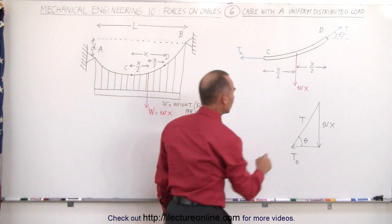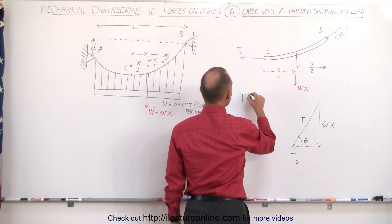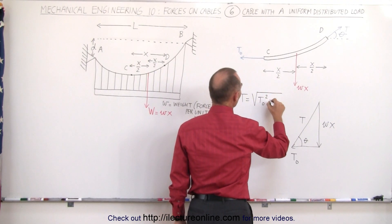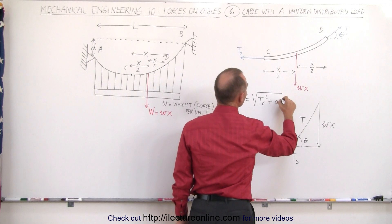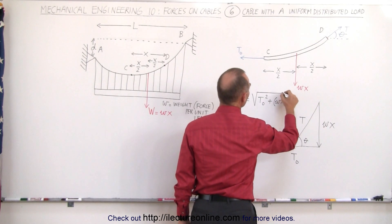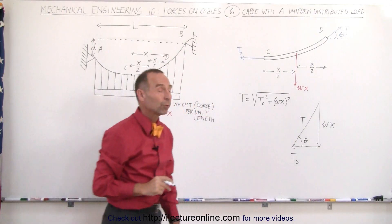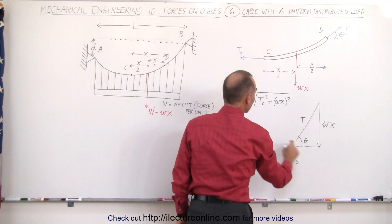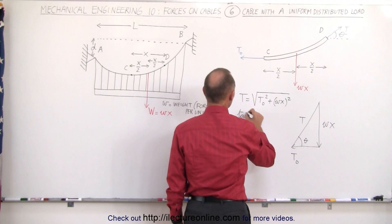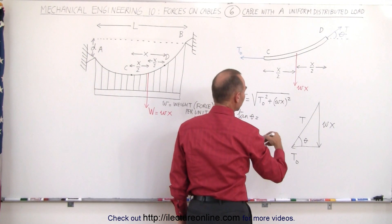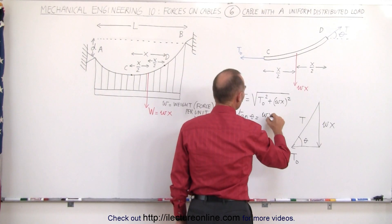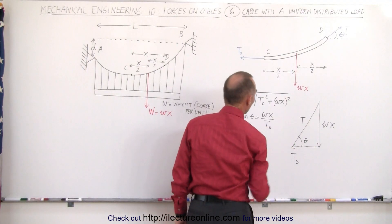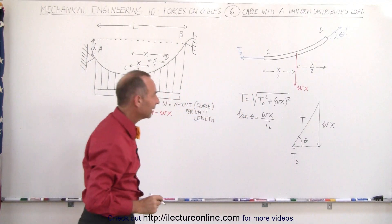We can see that the tension T equals the square root of T0 squared plus (omega times X) squared. We also have a relationship between the angle and those two sides: the tangent of theta is equal to the opposite side — the weight of that section on the cable — divided by T0, the horizontal tension component in the cable.